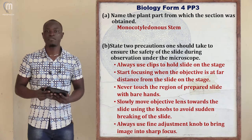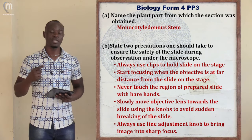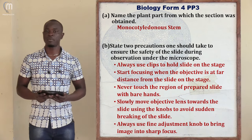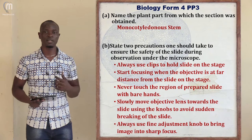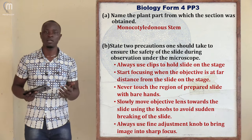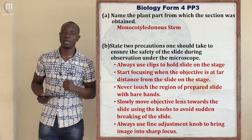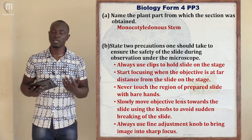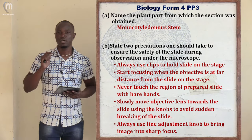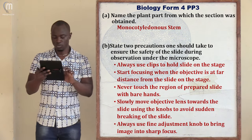A third precaution: never touch the part of the slide containing the specimen with bare hands, because this will easily damage the specimen. Impurities from your hand may contaminate it, and your finger may also damage the part of the specimen to be observed. Never touch the part of the slide containing the specimen, as this may lead to distortion of what you are supposed to observe.